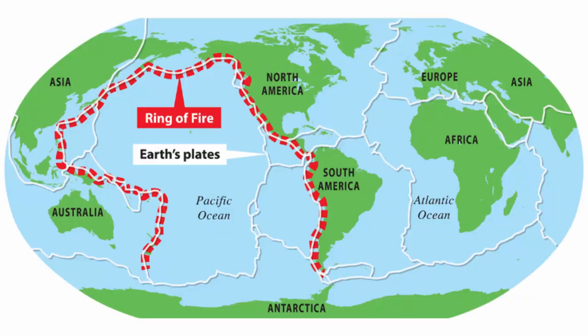A good example is the Ring of Fire in the Pacific Ocean. The Ring of Fire is a ring of volcanoes around the Pacific Ocean that resulted from the collision of oceanic plates with lighter continental plates.